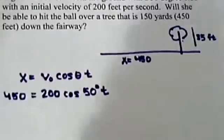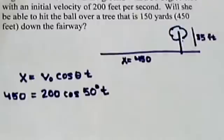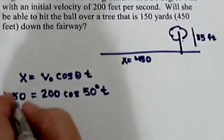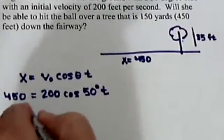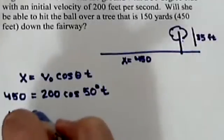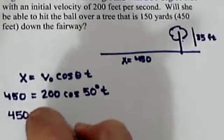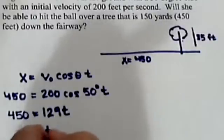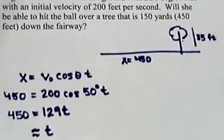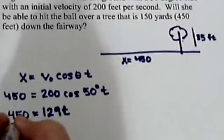So to solve it for t, let's calculate this out. 200 cosine 50, that's about 128.5. Let's round it to 129. So we have 450 equals 129t. So that gives us a t value of about 3.5.